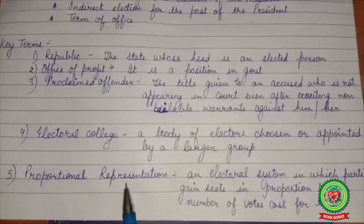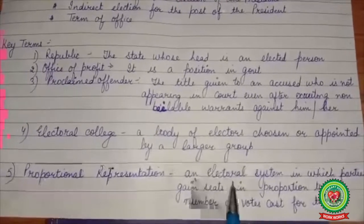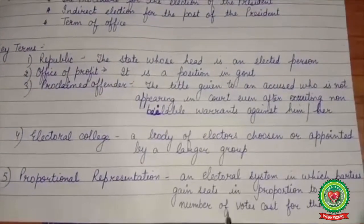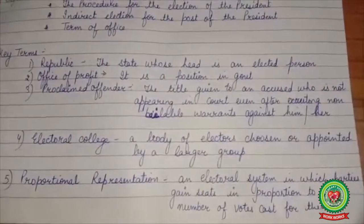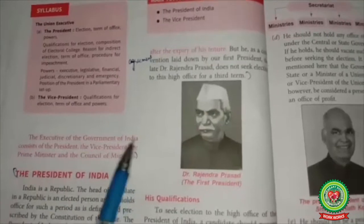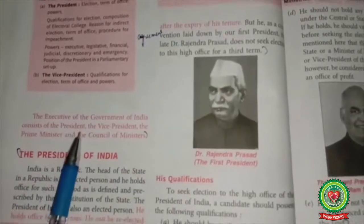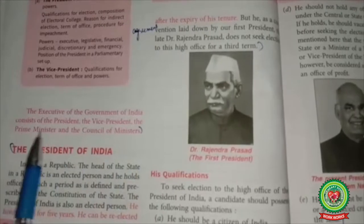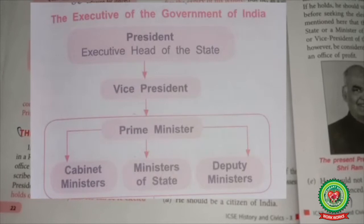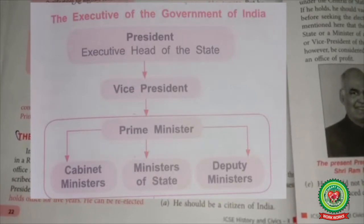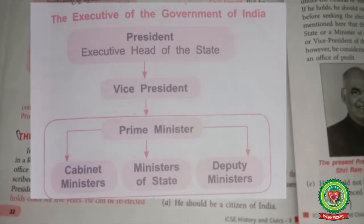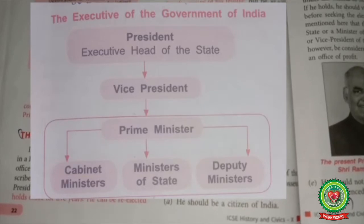Fifth, Proportional Representation — it means an electoral system in which parties gain seats in proportion to the number of votes cast for them. The executive of the Government of India consists of the President, the Vice President, the Prime Minister and the Council of Ministers. The Union Executive consists of the President, the Vice President and the Council of Ministers with the Prime Minister as the head to aid and advise the President.